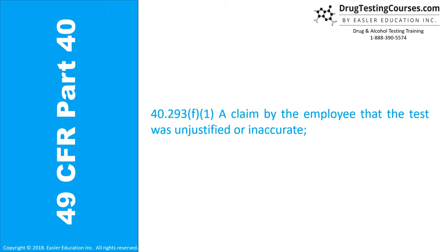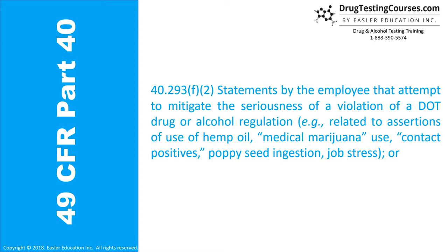Section 40.293 F1: A claim by the employee that the test was unjustified or inaccurate. Statements by the employee that attempt to mitigate the seriousness of a violation of a DOT drug or alcohol regulation, e.g., related to assertions of use of hemp oil, medical marijuana use, contact positives, poppy seed ingestion, job stress, or similar claims.